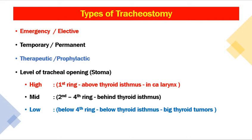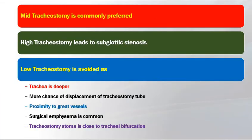Tracheostomy can also be divided by the level of the tracheal opening. High tracheostomy is made at the first ring or above the thyroid isthmus, usually performed in carcinoma larynx before total laryngectomy. Mid tracheostomy is between the second and third rings of the trachea, behind the thyroid isthmus — this is the most commonly performed and is the standard routine. Low tracheostomy places the stoma below the fourth ring, below the thyroid isthmus, usually for large thyroid tumors.